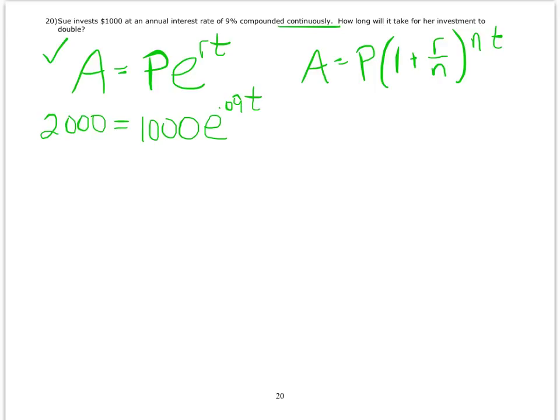And now I have to solve this equation for T. So my first goal is to isolate the exponential expression, so I'm going to divide both sides by 1,000. And I get 2 equals E to the 0.09 T.